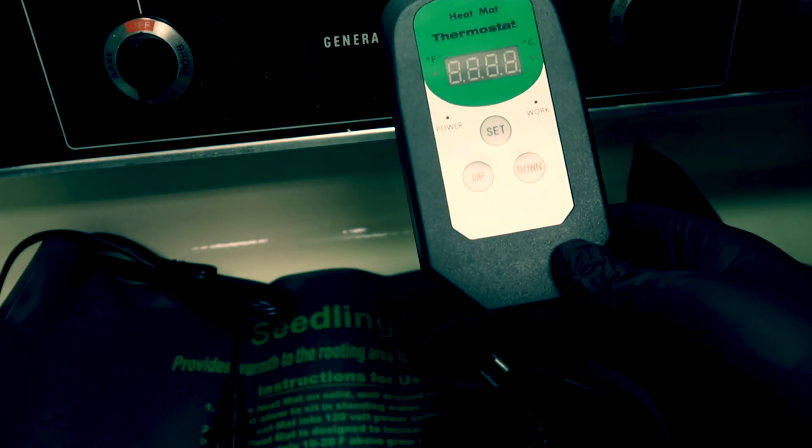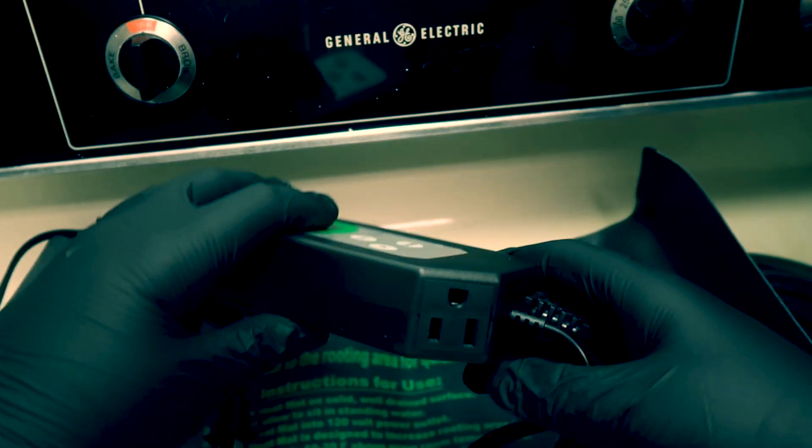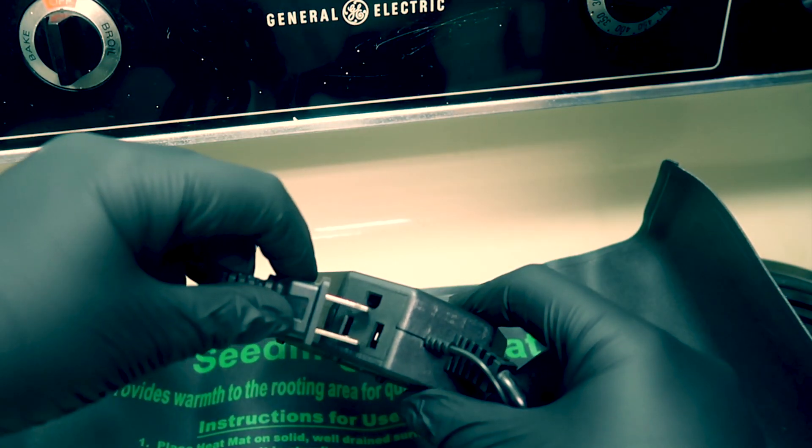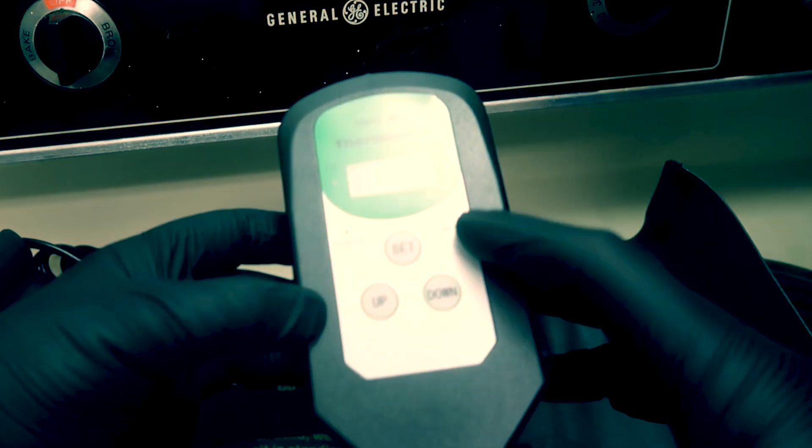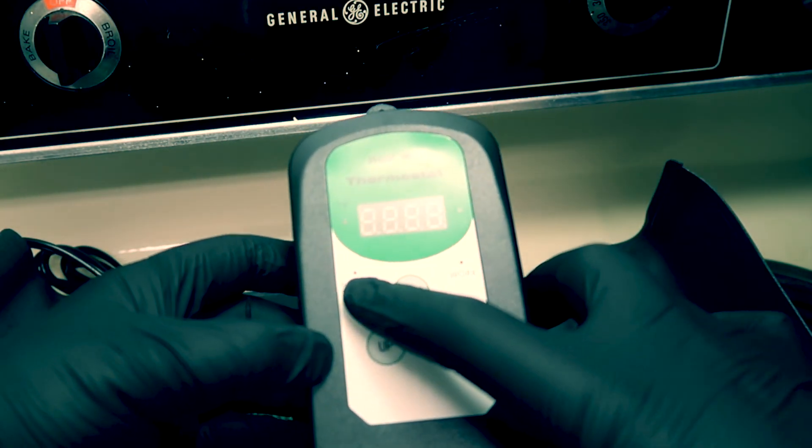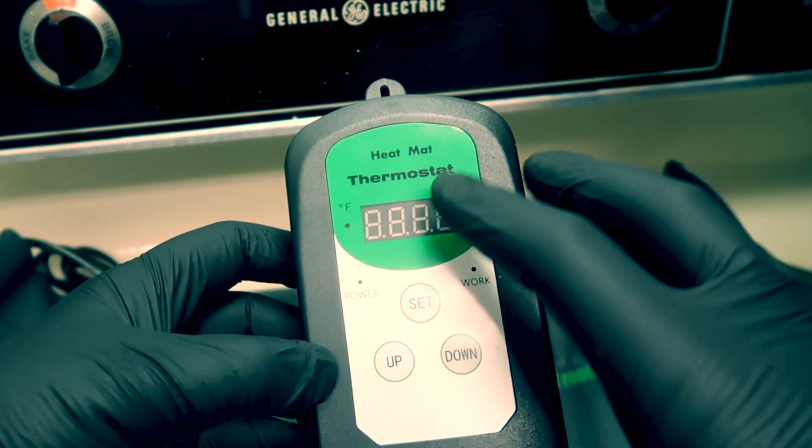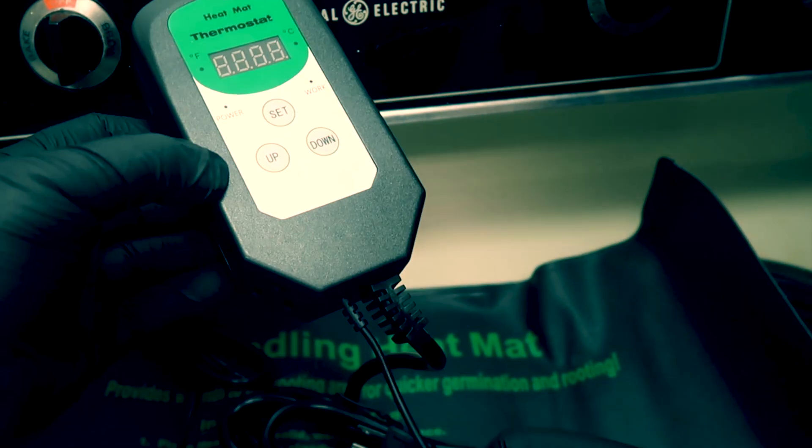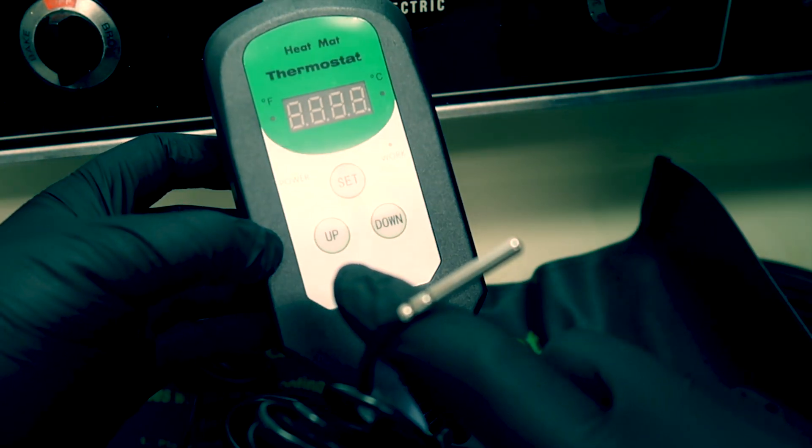So how it works is pretty self-explanatory. The heat mat plugs into the thermostat and then you control and set the temperature on which you want it to power on, keep building temperature until it turns off and maintains that temperature. And here's a little temperature probe and this is all we're going to need.